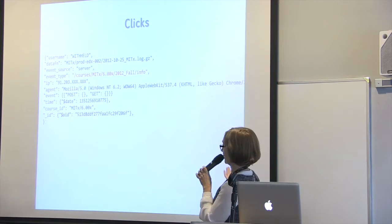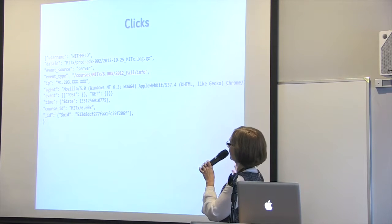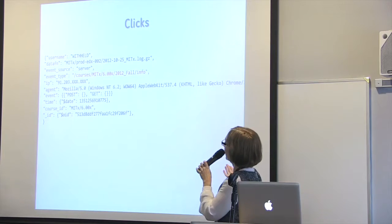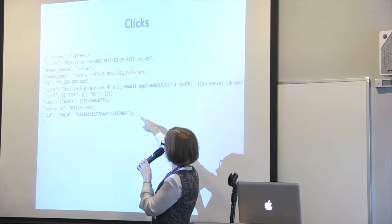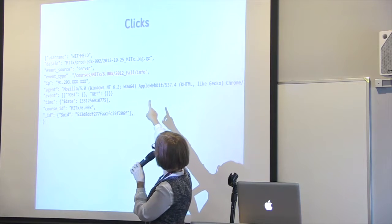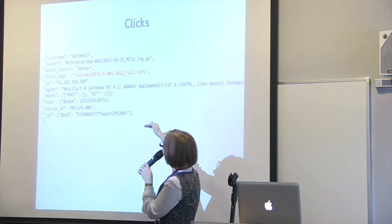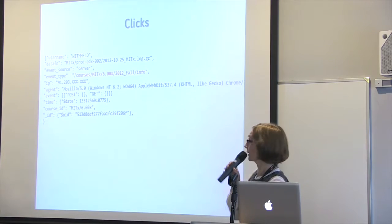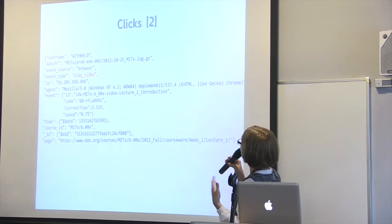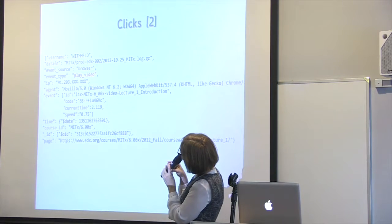Not everyone has access to user tracking databases, but basically the clicks look like this: there are data points that include an event type — in this case it could be a landing page — and a timestamp. For a play video event, you have more information: which page the video appears on, the title of the video, where the student started, and even the playback speed.